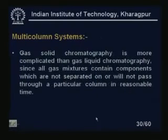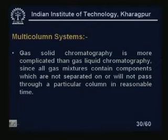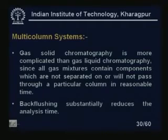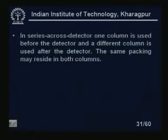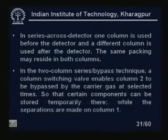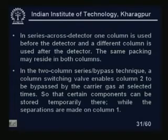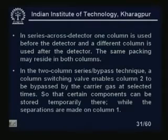Gas-solid chromatography is more complicated than gas-liquid chromatography because some components will not separate on, or pass through, a particular column in reasonable time. Back-flushing substantially reduces analysis time. In series-across-detector arrangements, different columns are used before and after the detector. In two-column series bypass technique, a column-switching valve enables column 2 to be bypassed at a selected time so that certain components can be stored temporarily while separations are made on column 1.